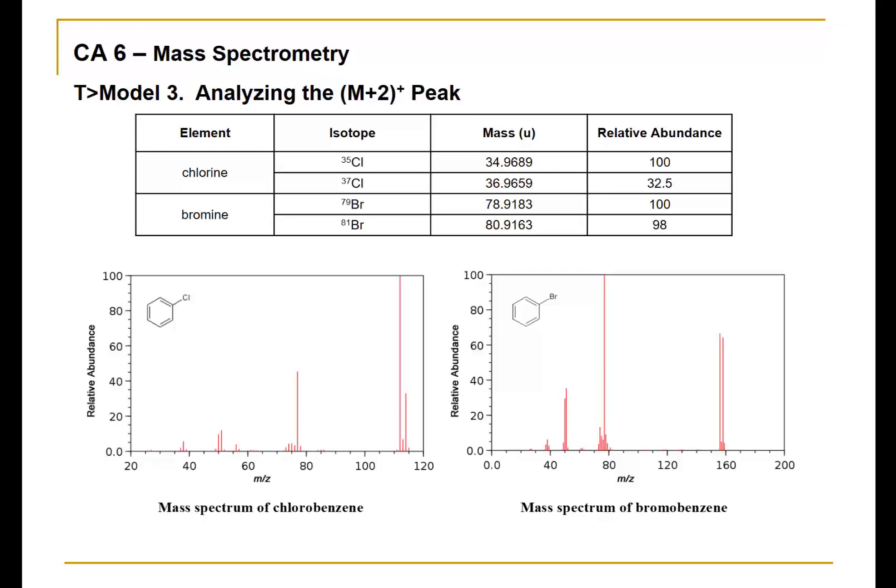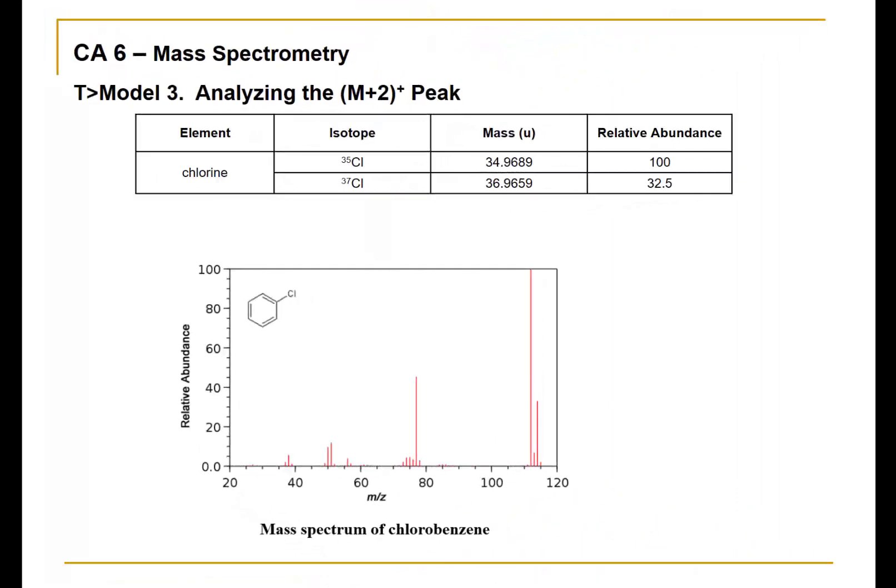Here's the mass spectrum for chlorobenzene. Let's investigate what the molecular ion peak and the M plus 2 peak actually represent. Here I draw most of the benzene ring and add the chlorine. I'm assuming it's all carbon-12 and hydrogen-1, but I need to specify which chlorine isotope this is, corresponding to chlorine-35.